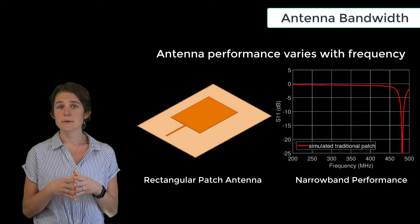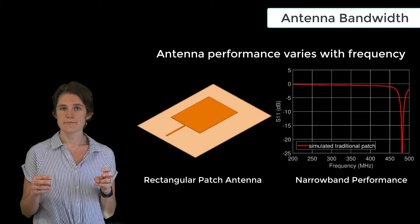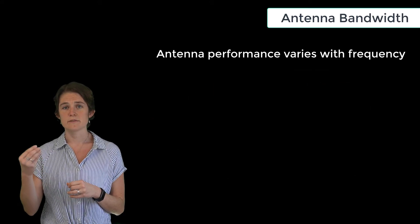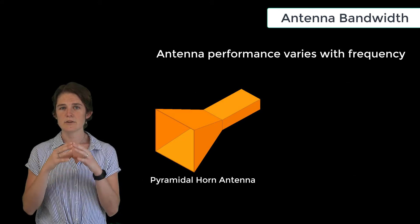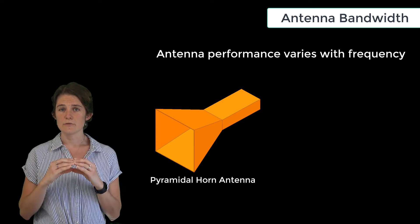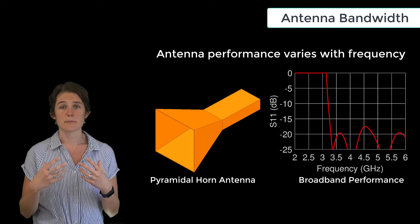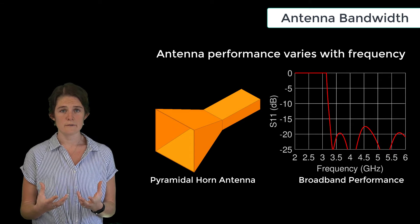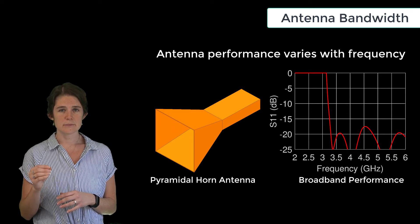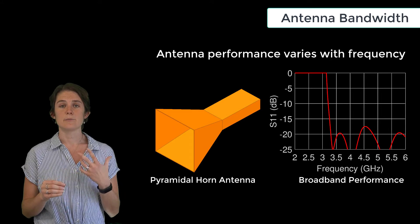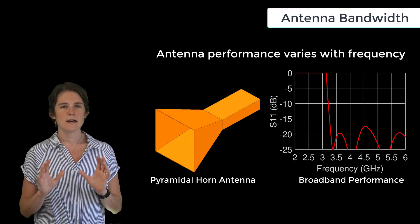frequency. This is typically considered a narrowband antenna topology. On the other hand, the performance of a pyramidal horn antenna is tied to the behavior of the guided wave modes in the throat of the antenna. The antenna characteristics of a pyramidal horn vary slowly with small changes in frequency — this is typically considered a broadband antenna topology.